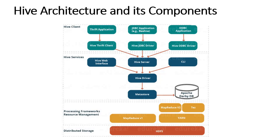Metastore configuration stores metadata information using RDBMS and an open-source object-relational mapping layer called DataNucleus, which converts the object representation into the relational schema and vice versa. The reason for choosing RDBMS instead of HDFS is to achieve low latency. You can implement the metastore in the configuration of embedded, local, or remote metastore.